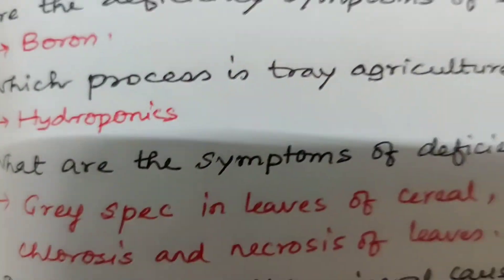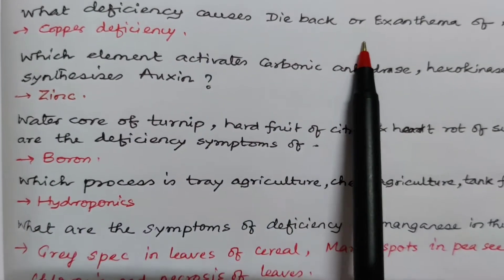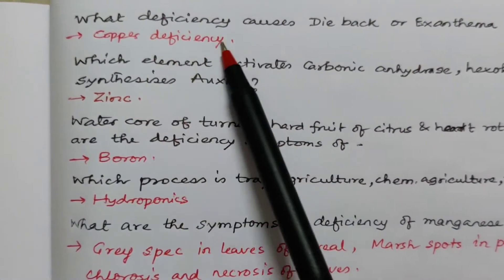Coming to the next question friends. What deficiency causes dieback or exanthema of apple? It is copper deficiency.